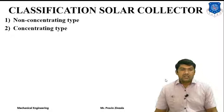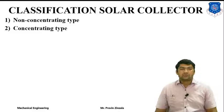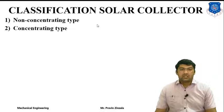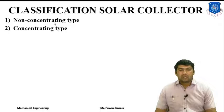Now we will discuss the classification of solar collectors. There are basically two types of solar collector according to the concentration of solar radiation or its utilization. The first type is the non-concentrating type collector. Non-concentrating type means it is a simple type of collector used for simple applications or at a normal temperature range — such as solar cookers, space heating, space cooling, and solar water heaters.